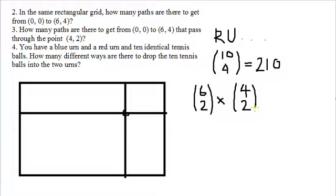6 choose 2 is 15, and 4 choose 2 is 6. So that gives us 90 for the second part. And finally, problem 4 is leading into what we're doing next.